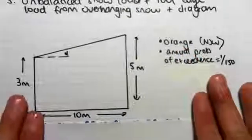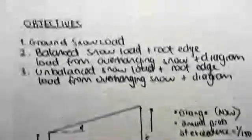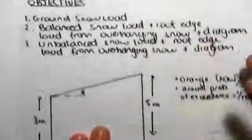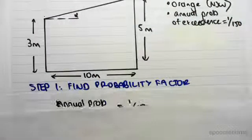The building is located in Orange and we have an annual probability of exceedance of one in 150. So just in this video we're going to be finding the ground snow load. Step one is finding the probability factor.